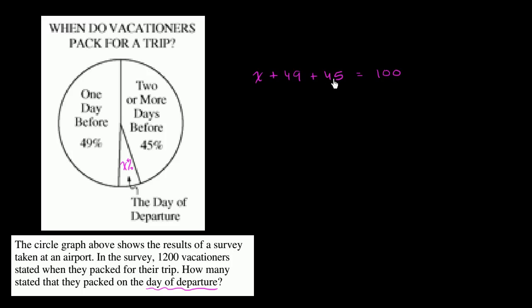All of the people did one of these three things. And so let's see, 49 plus 45 is going to be equal to, let's see, 49 plus 45, that's going to be equal to 94. So x plus 94 is equal to 100.